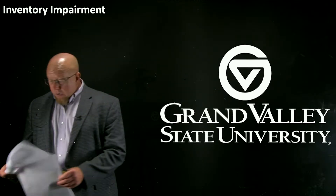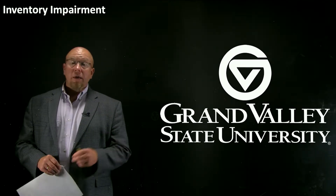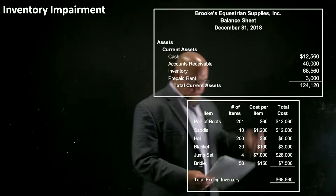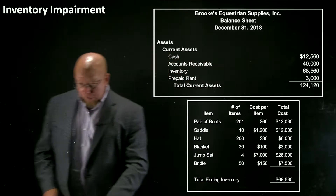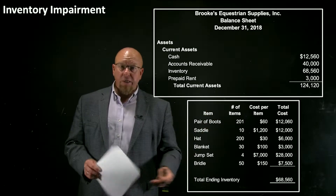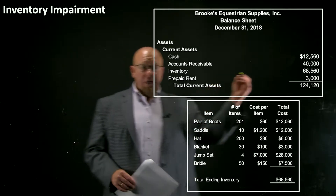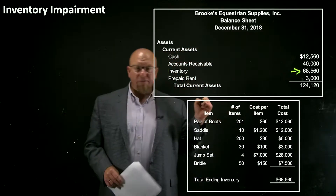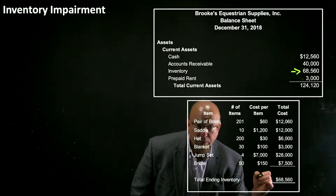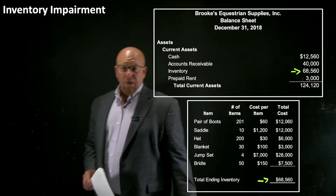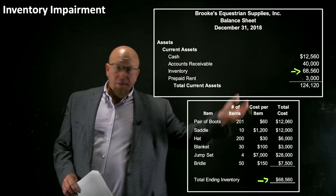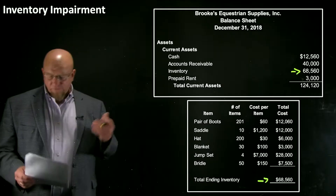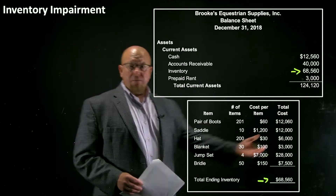If market conditions indicate that an item of inventory has lost some worth, we may have an argument for impairing or writing down that inventory on the balance sheet. Let's take a look at this Equestrian Supply Company — we used this same illustration when we looked at periodic and perpetual inventory. This company has inventory currently being reported at the end of December at $68,560. Here's the inventory listing: number of items times cost per item equals the extended total cost, and that matches up to the $68,560.